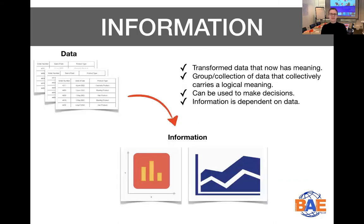Information is really where we take the data and transform it in some way. The most common way would be to run queries or calculations, or a system will produce a report for us. Now that report contains meaning — some form of logical meaning — but essentially it's based on the data. So all information really is, is meaningful data. And it's important to realize that information is dependent on data.